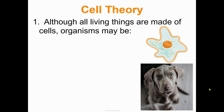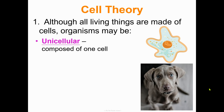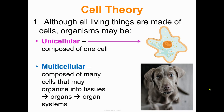Let's look at the first part of the cell theory. Although all living things are made of cells, organisms may be unicellular, meaning they're composed of just one cell, or multicellular, composed of many cells that may organize into tissues, organs, and organ systems.